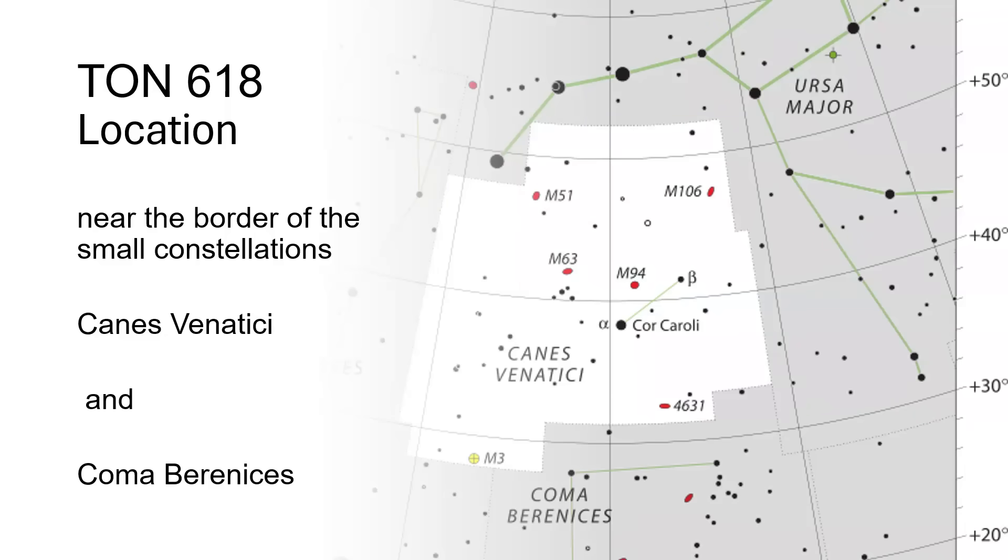TON 618 is located on the border of two small constellations just below the tail of Ursa Major the Great Bear. These are Canis Venatici, the hunting dogs, and Coma Berenices, which is Bernice's hair.